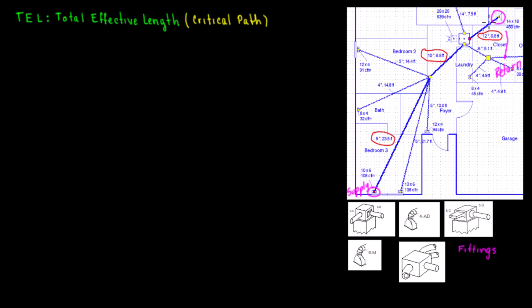The critical path comes from the return, goes through the equipment, goes to the supply trunk, from the supply trunk comes through the branch — that is the critical path, which is the longest path.